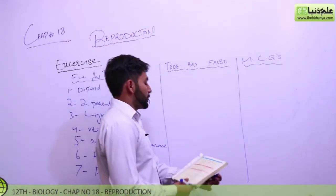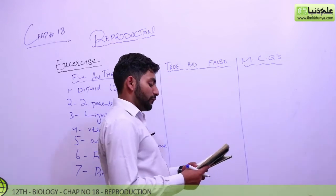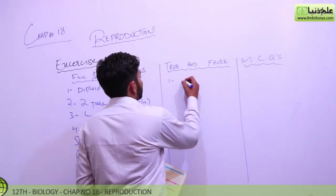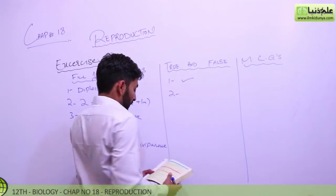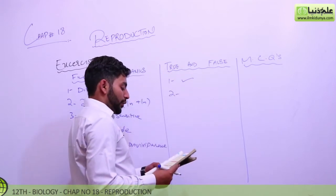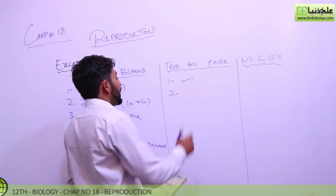Then we come to true and false. Is that asexual reproduction involves mitotic cell division? Of course yes. Then he asks, asexually produced offspring are genetically identical to their parents? Yes, they are.